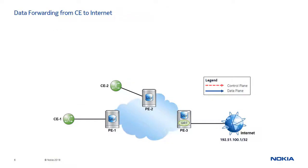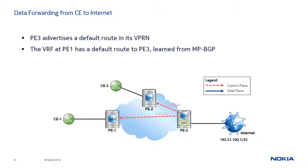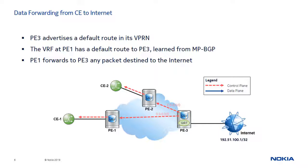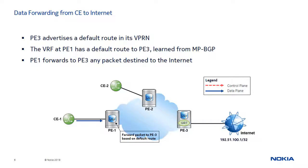To support data forwarding from CE1 and CE2 toward the Internet, PE3 first advertises a default route in its VPRN. PE1 and PE2 receive this default route via MPBGP, install it in their corresponding VRFs, and advertise it to their attached CEs. This ensures that on PE1 and PE2, an incoming packet destined to the Internet is forwarded to PE3. In this example, when CE1 sends a packet to IP address 192.51.100.1, it first forwards the packet to PE1. PE1 then looks in its VRF route table, and the incoming packet matches the default route in PE1's VRF and is forwarded to PE3.